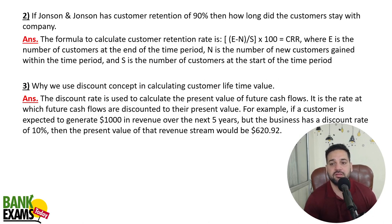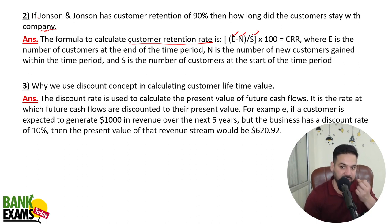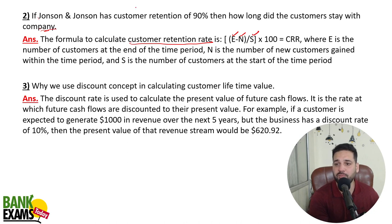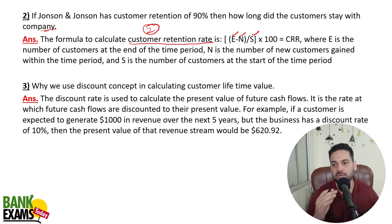If Johnson and Johnson has a customer retention of 90%, how long do customers stay with the company? Customer retention rate is a very important topic — there were two numerical questions from it last year. The formula: E is the number of customers at the end of the period, N is new customers, S is the starting number. CRR = (E minus N) divided by S, multiplied by 100. We'll do a proper session on this next week.